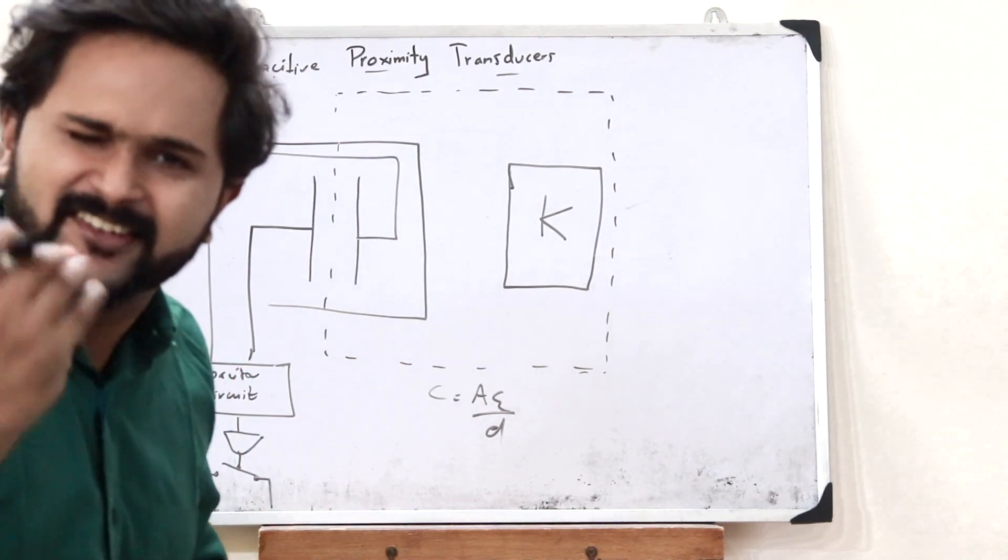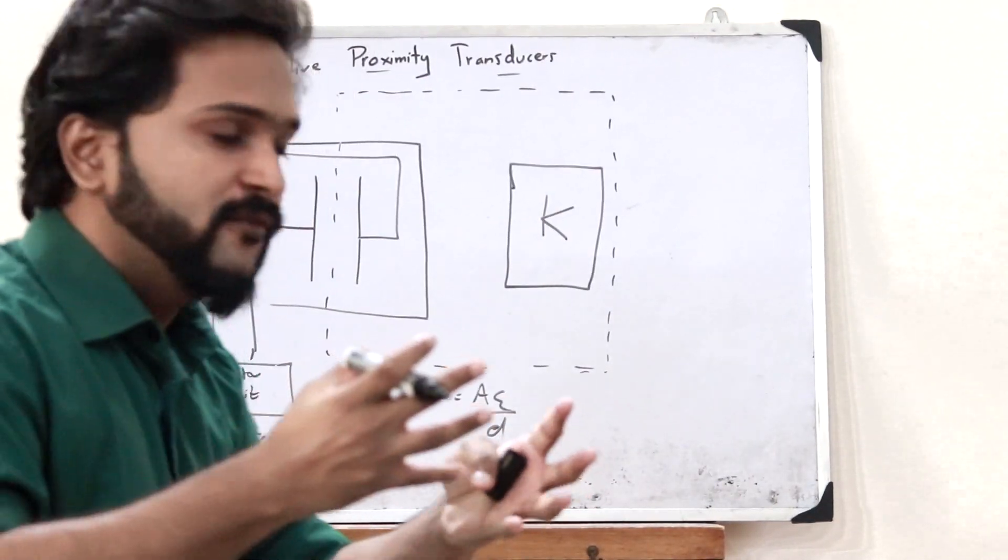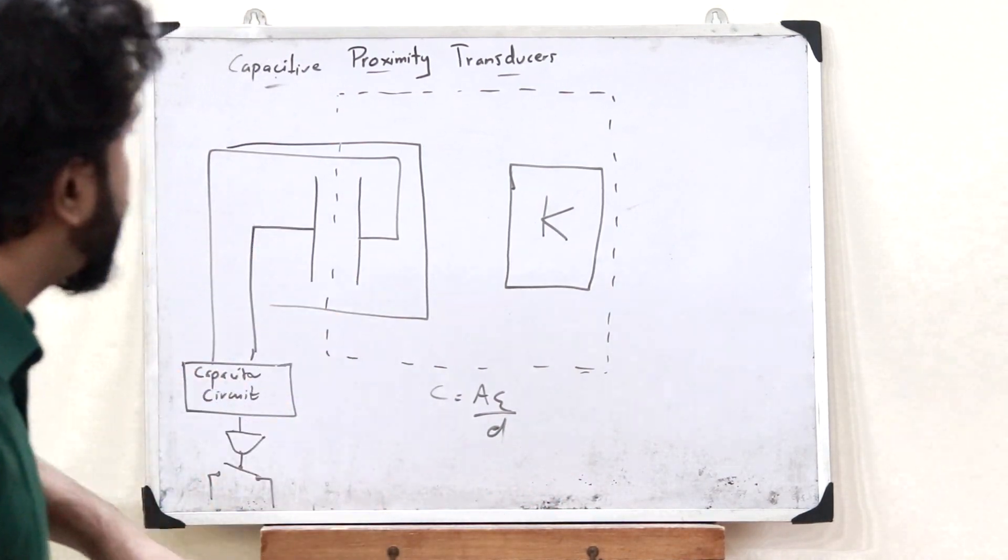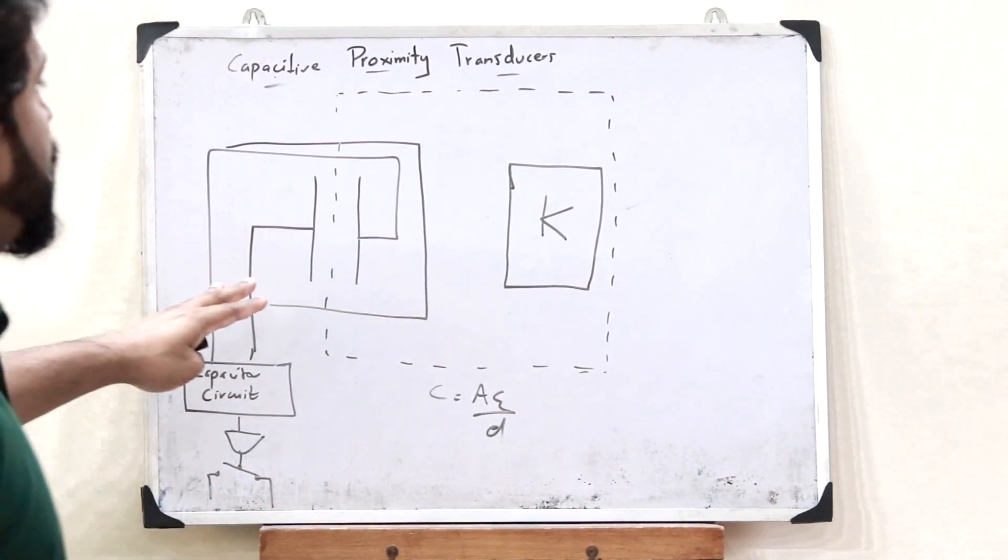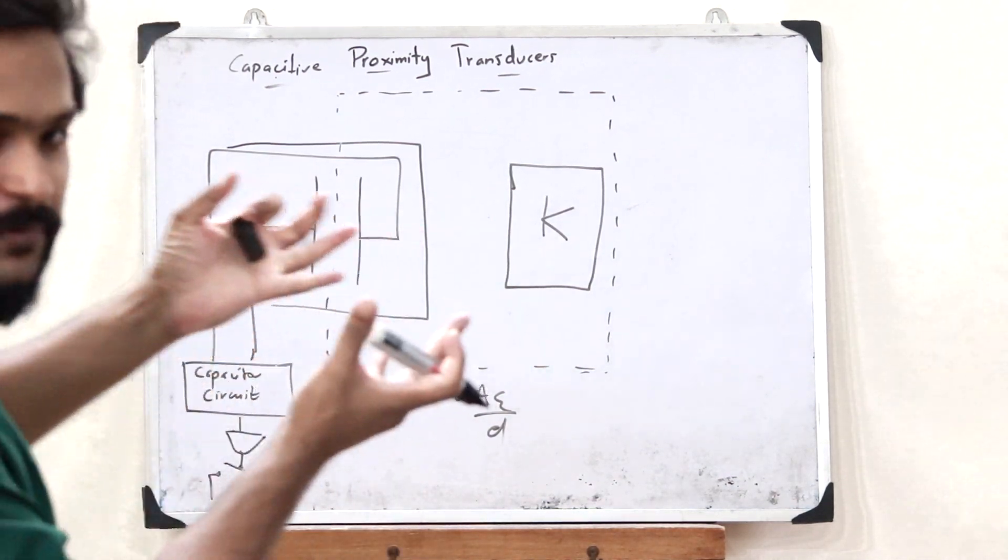As simple as that. This is simply how you detect the presence of an object in the vicinity of this particular proximity transducer using the principle of a parallel plate capacitance.